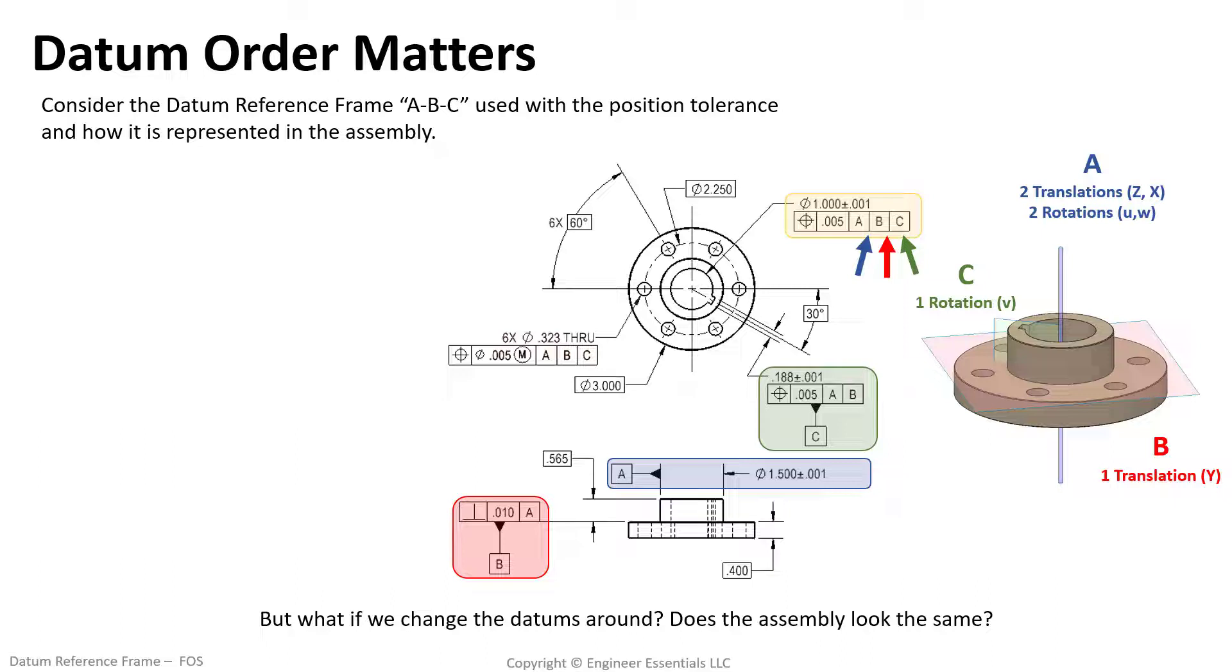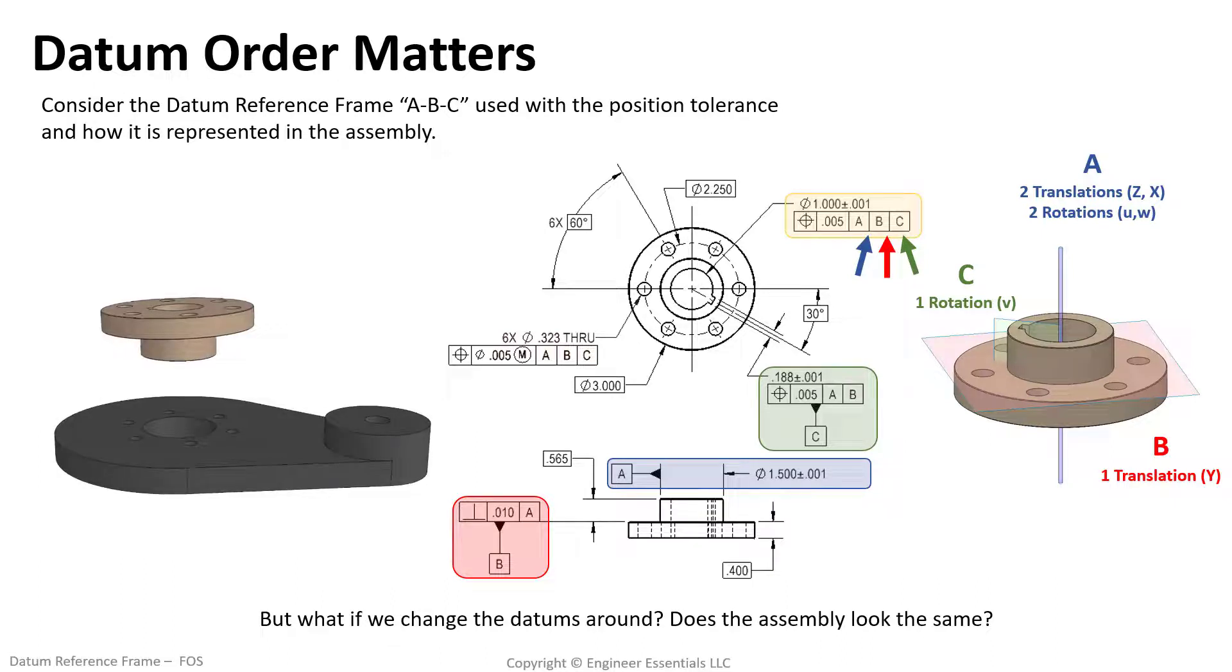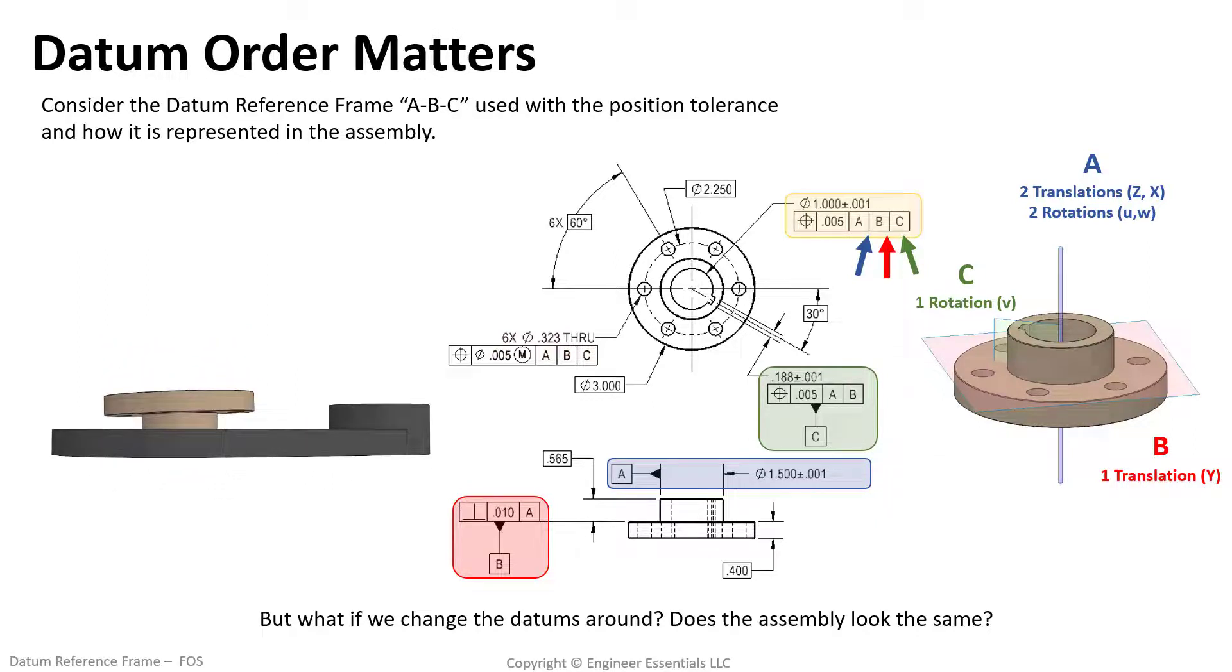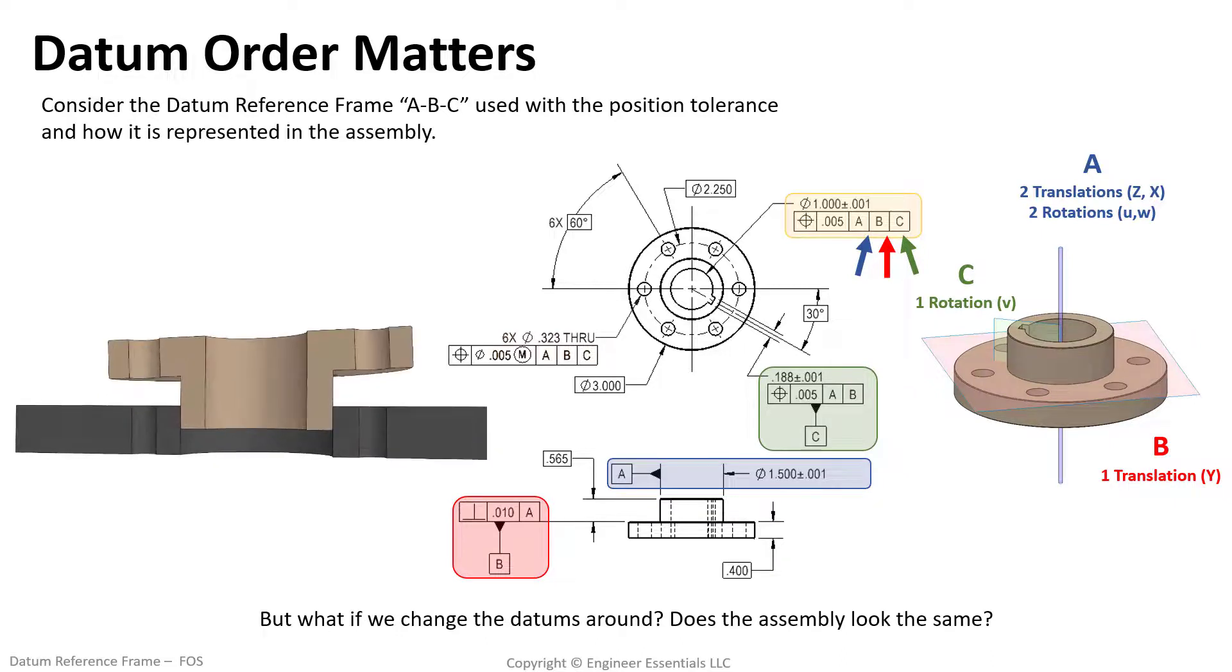While this may seem insignificant it completely changes the intent of the part. Now see how our part assembles and notice we are declaring the boss as datum feature A and it is going to lock down the orientation of the part regardless of the plane's orientation. Then the plane as datum feature B will only lock down one translation.